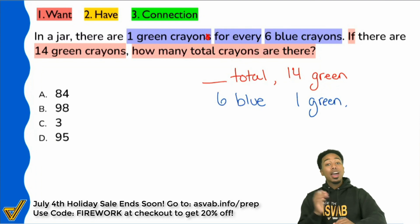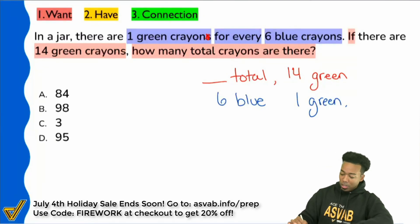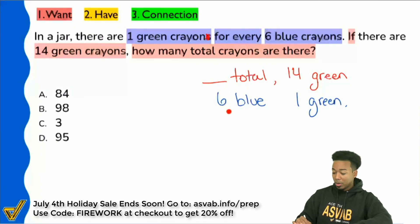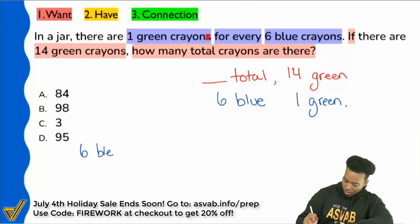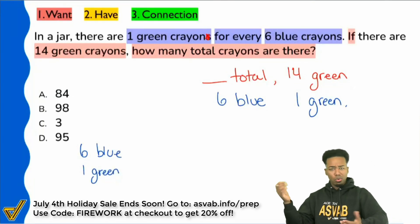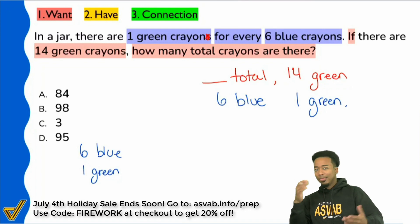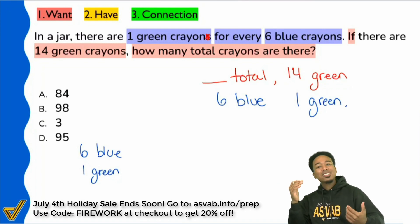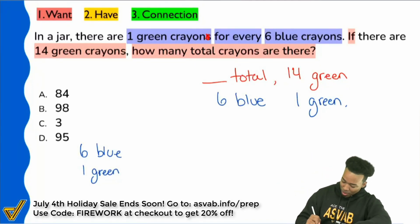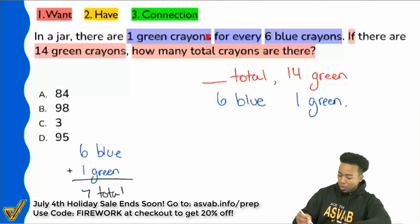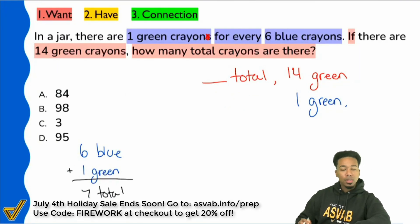How we're going to fix it here is by adjusting this side to match the other. We're looking for total, so I'm going to keep that there. If I have six blue and I have one green, what's the total going to be? What does total mean? Add it all up — that's what total means. So we're going to add these together: six plus one is seven total, and that's what we're going to put here instead of six blue. It's all about comparing the same things in the same way.